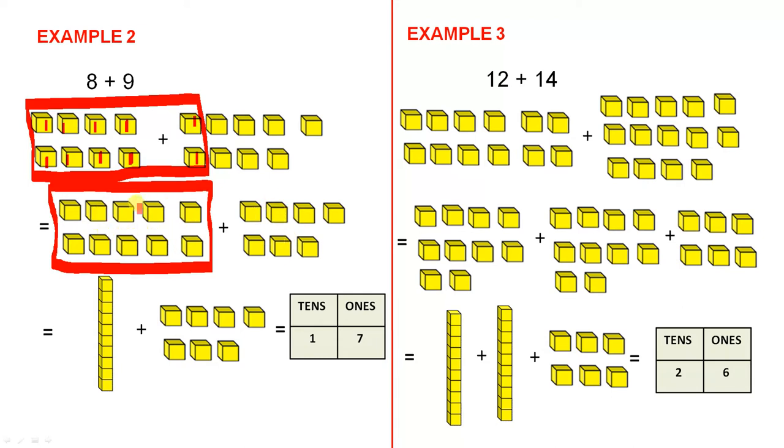Now these 10 singles or 10 ones, the trading comes in because we can give them away or trade them for one of these, which is one lot of 10. Here's our 7 singles. One lot of 10 and 7 ones, that gives you 17.